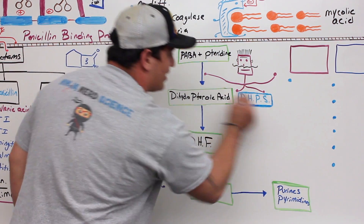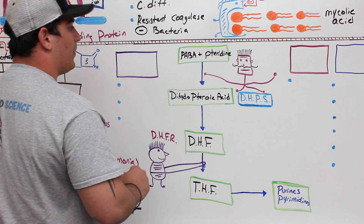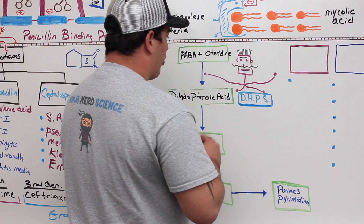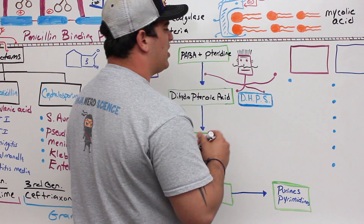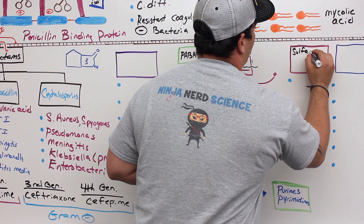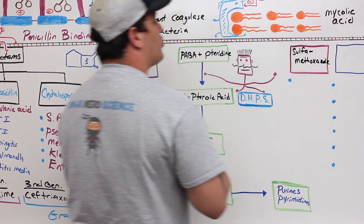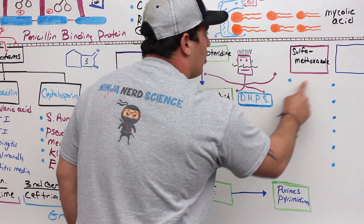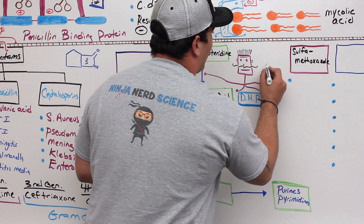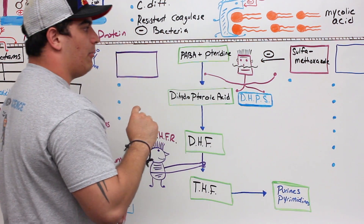The first thing we're going to target is this dihydropteroate synthetase enzyme. The drug we're going to use is from a group called sulfonamides. A specific sulfonamide is sulfamethoxazole. What is sulfamethoxazole doing? It's inhibiting dihydropteroate synthetase by acting as a substrate analog, inhibiting the enzyme from binding onto para-aminobenzoic acid.